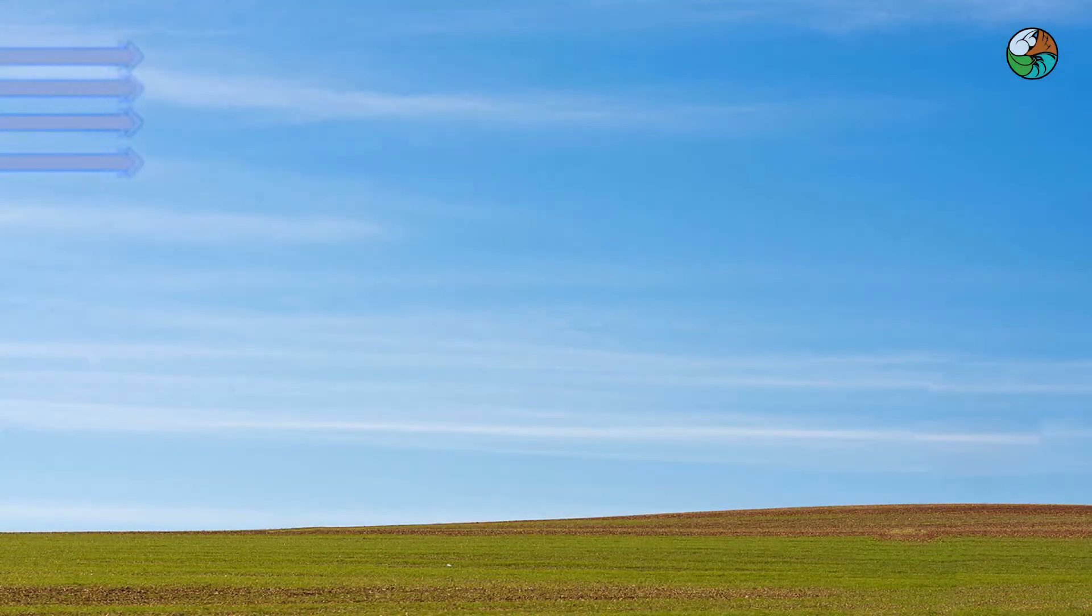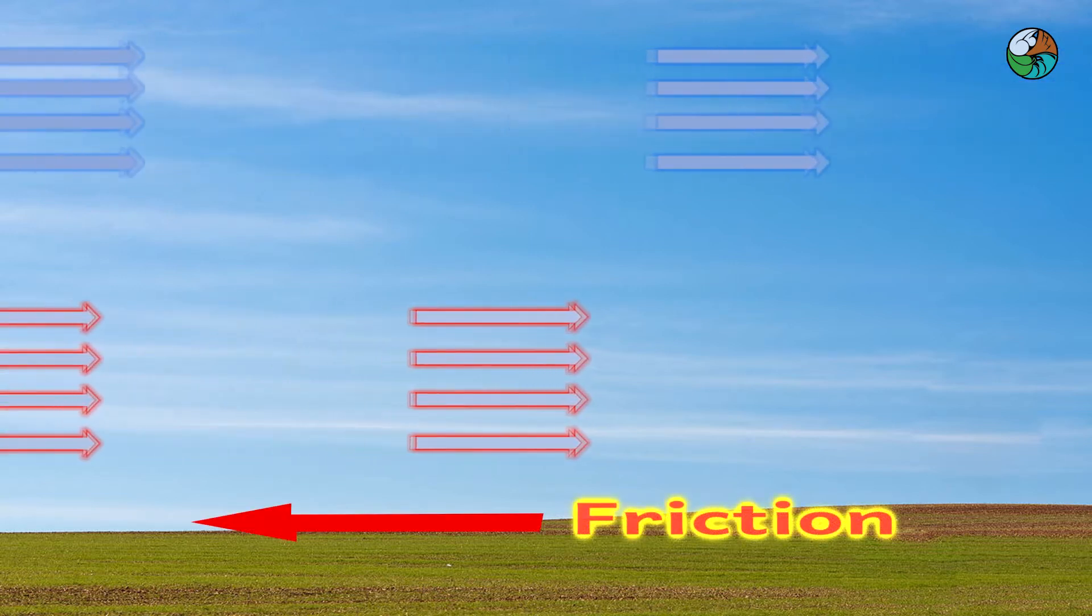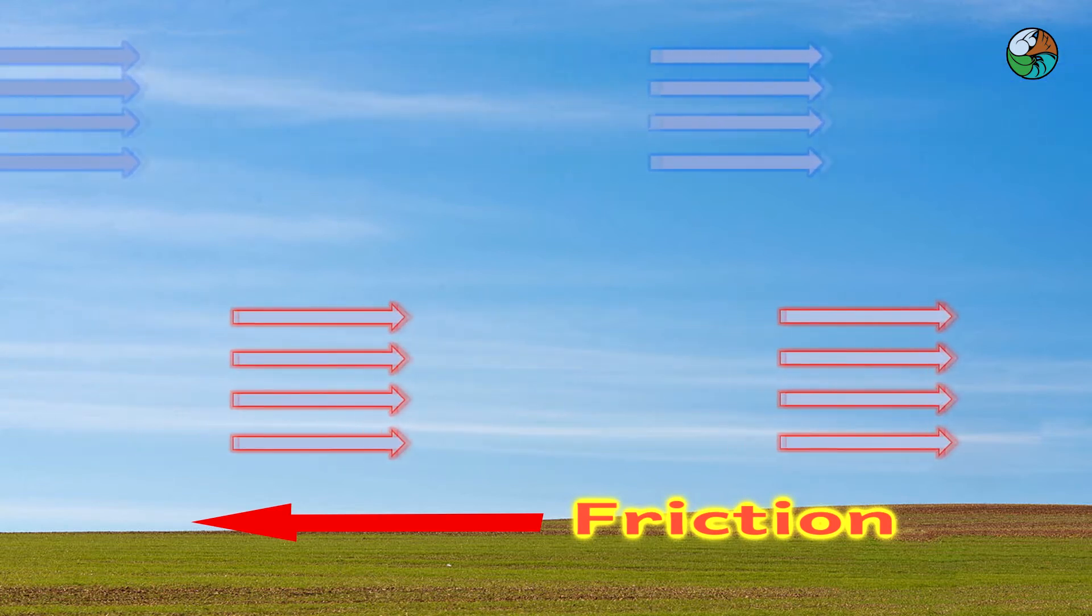When wind blows in the atmosphere, air near the surface rubs against the Earth's surface. Friction then plays an important role in the balance of forces.